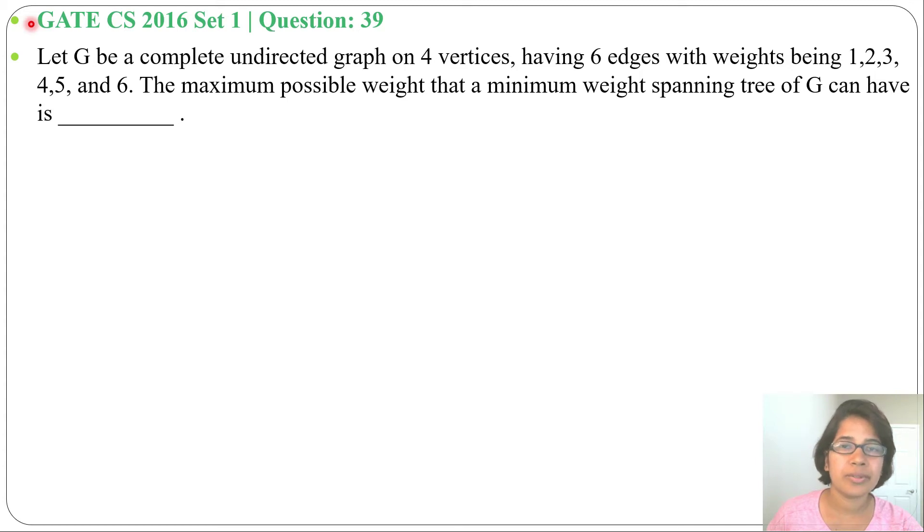Hi, let's hop on a previous question of greedy technique. This question was asked in GATE CS 2016 Set 1, Question Number 39. Let G be a complete undirected graph on 4 vertices having 6 edges with weights being 1, 2, 3, 4, 5, 6. The maximum possible weight that a minimum weight spanning tree of G can have is...